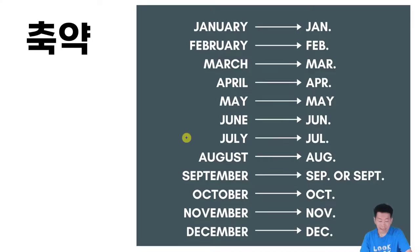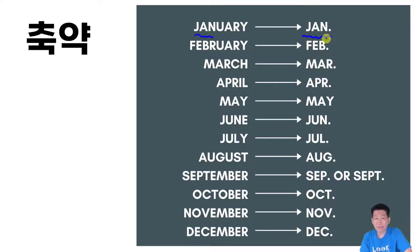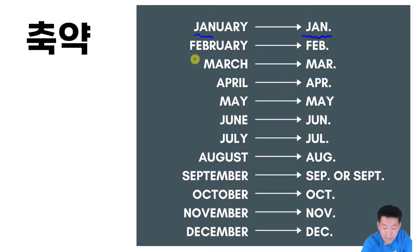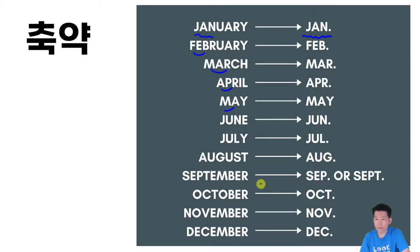그럼 추약할 때 아까 전에 January를요, 앞에 있는 JAN이라고 한다고 말씀드렸죠? 쓸 때 이렇게 쓸 수 있다고 말씀드렸습니다. 나머지도 마찬가지입니다. 앞에 있는 세 글자 있죠? 요거만 쭉 한번 보시면요, 느낌이 좀 오실 겁니다. 이렇게 추약할 수 있다는 거 알고 넘어가세요.